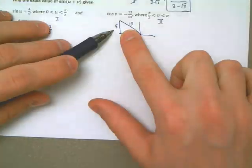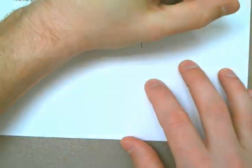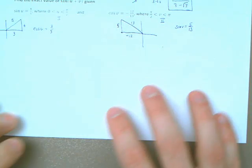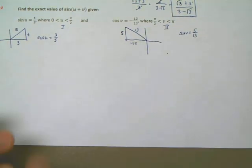Pythagorean theorem will tell you that. So this is important because it tells us that if the cosine is negative 12/13 and it's in the second quadrant, then we know the sine is 5/13. So we know the sine of v is equal to 5/13.